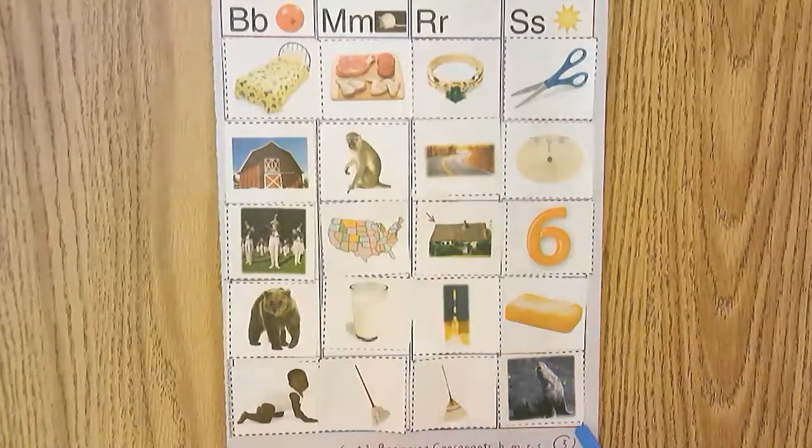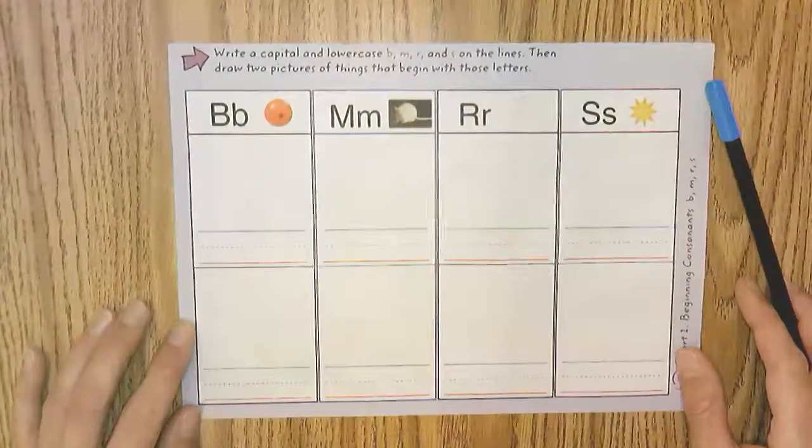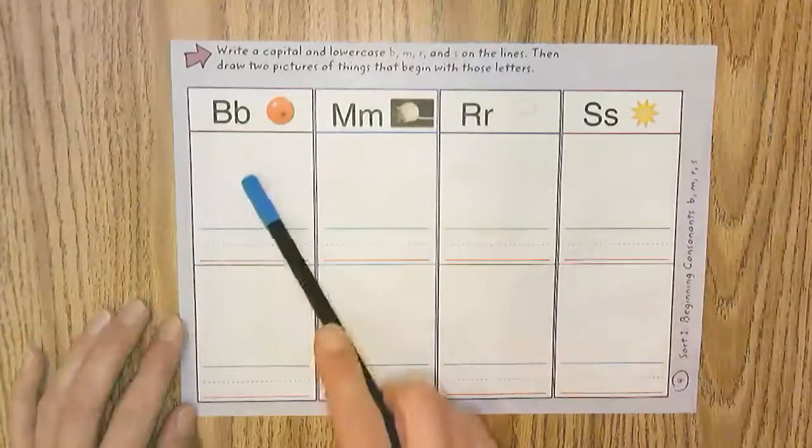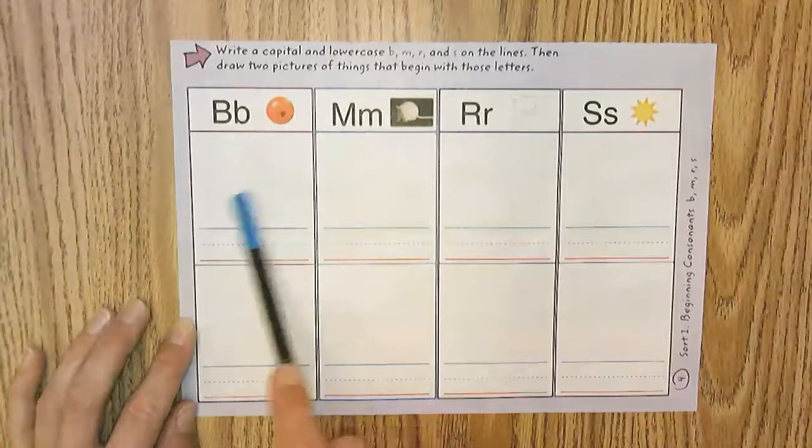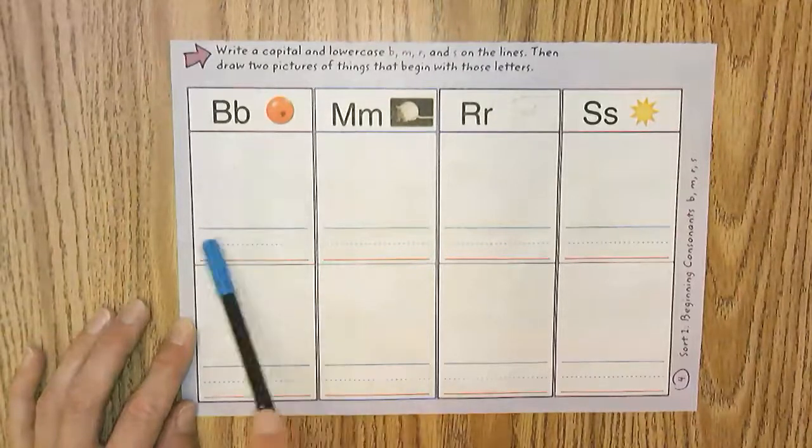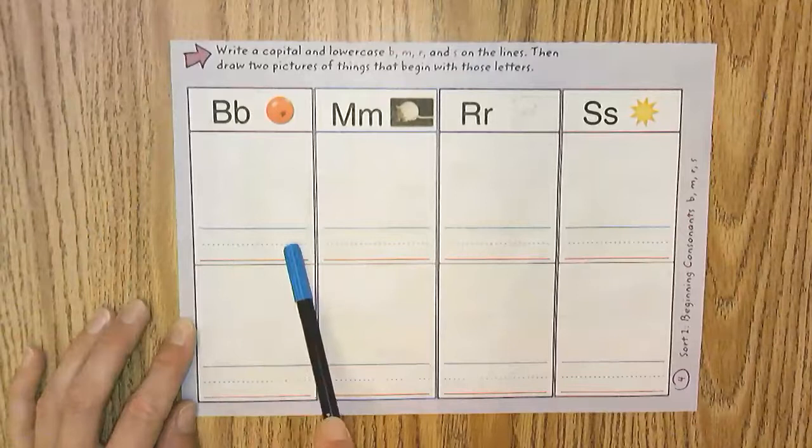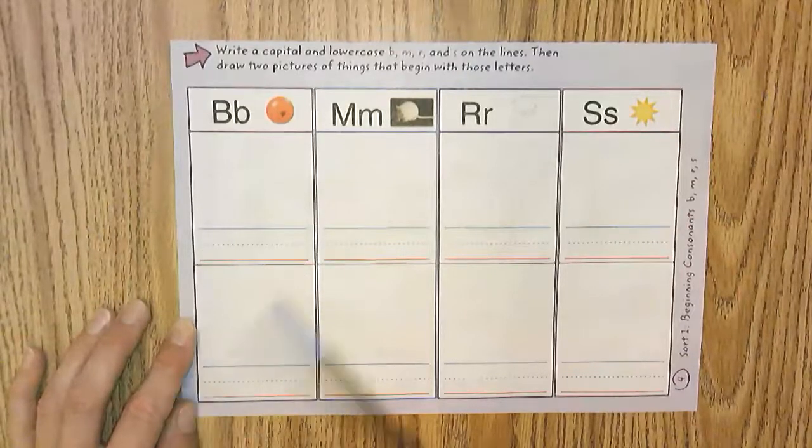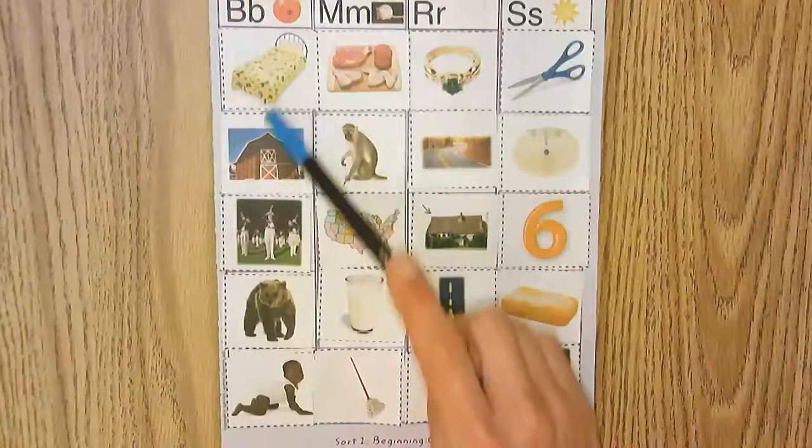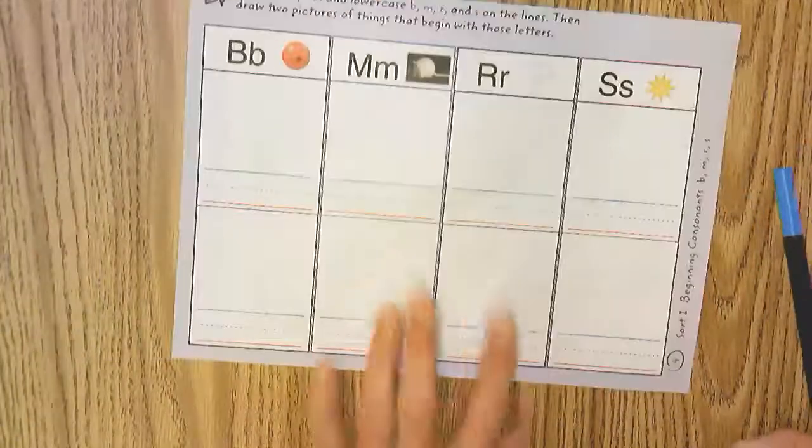Once you're done and you have all your pictures glued on this page, you turn the page over and you will see that you are going to be drawing and writing two words that start with the B. So for example, you can draw a baby and write the word baby. You can draw any word that starts with a B. It would be easier if you keep these words that were on this page here. So you can draw a bed, a barn, a bear. It would be easier. A band might be a little bit hard.